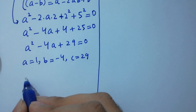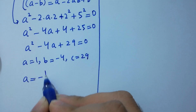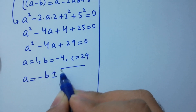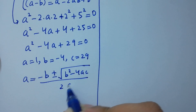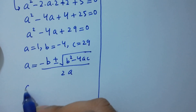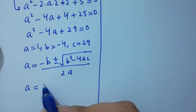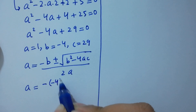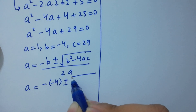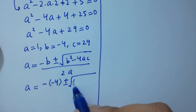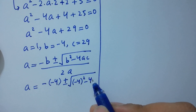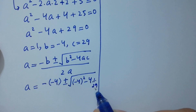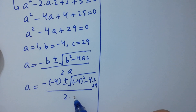Apply the quadratic formula: a equals minus b plus or minus square root of (b squared minus 4ac), over 2a. Putting the values in: B is minus 4, so we have 4 plus or minus square root of (minus 4) squared minus 4 times 1 times 29, over 2 times 1.